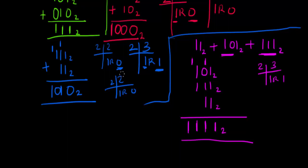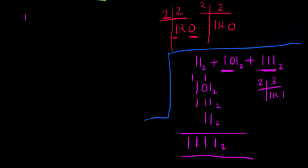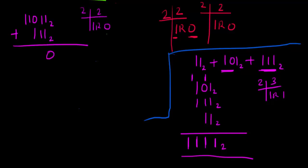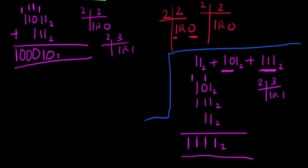Let's do two more examples. 11011 in base two plus 111 in base two. One plus one is two — I can't write two — divide: one remainder zero, write zero, carry one. One plus one plus one is three — can't write three — divide: one remainder one, write one, carry one. One plus one is two — divide: one remainder zero, write zero, carry one. One plus one is two — divide: one remainder zero, write zero, carry one. One plus one is two — divide: one remainder zero, write zero, carry one. Nothing left, write one. Answer: 100010 in base two.